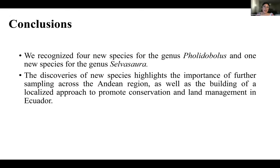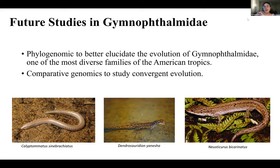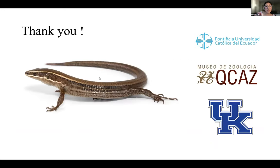The conclusions of the study were that we recognized four new species for the genus Pholidobolus and one new species for the genus Selvasaura. All these discoveries highlight the importance of further sampling across the Andean region as well as building localized approaches to promote conservation and management in Ecuador. My plan for my coming PhD years is to keep working on this family using phylogenomics to better understand its evolution, and to generate genomic data for comparative genomics to study convergent evolution and the evolution of interesting traits such as limblessness and body elongation.